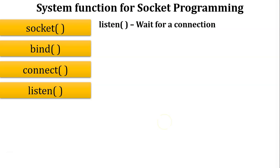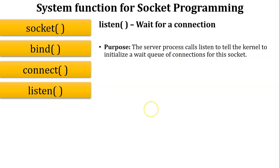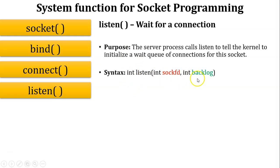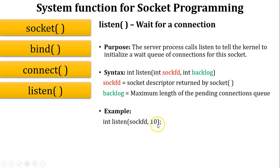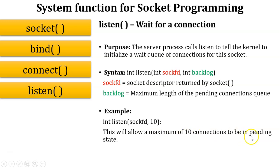The next function is listen, meaning wait for a connection. The purpose of listen is to listen for incoming connections from the client — it instructs the kernel to initialize a wait queue of connections for the socket. The syntax is: int listen(sockfd, backlog). The first argument is sockfd, same as before. The second argument backlog is the maximum length of the pending connection queue. For example, if backlog is 10, the server will allow a maximum of 10 pending connections.